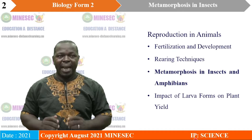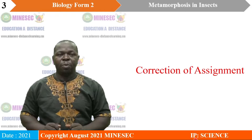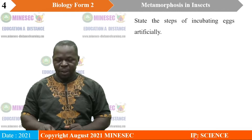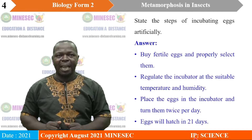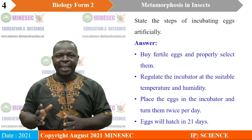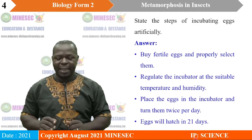We will begin with a correction of the assignment given to you last lesson. You were asked to state the steps of incubating eggs artificially. First, we buy fertile eggs and properly select them. We regulate the incubator at a suitable temperature and humidity. Then we place the eggs in the incubator and turn them twice per day. Eggs will hatch into chicks in 21 days.